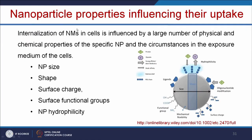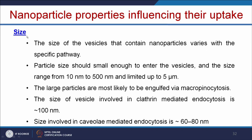Nanoparticle properties play a major role in cellular uptake, including size, shape, surface charge, surface functional groups, and hydrophilicity. Regarding size, the vesicles containing nanoparticles vary in size with the specific pathway, and particle size should be small enough to enter vesicles — typically ranging from 10 nanometers up to 5 micrometers. Larger particles are most likely engulfed by macropinocytosis. The vesicle size in clathrin-mediated endocytosis is approximately 100 nanometers, and in caveolae-mediated endocytosis is 60 to 80 nanometers.